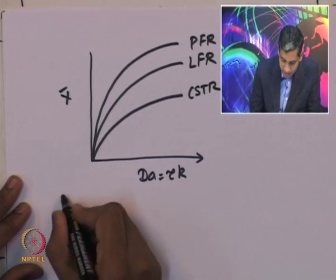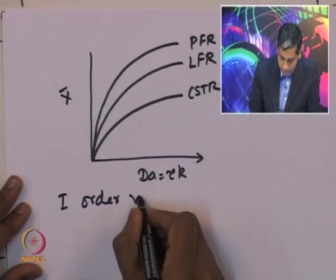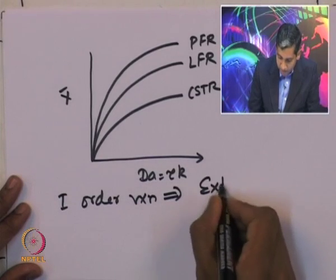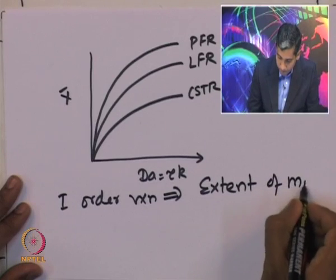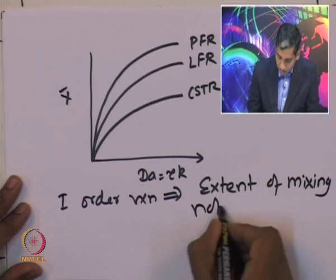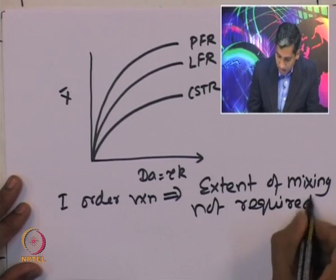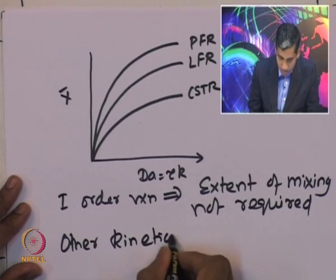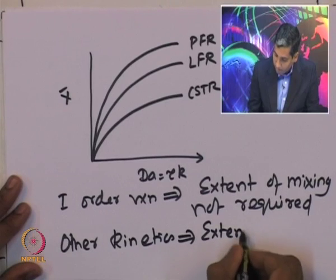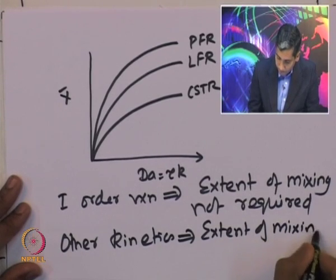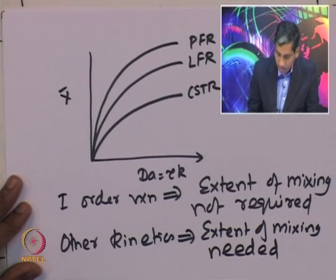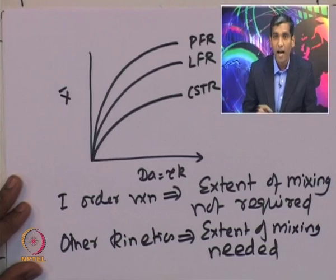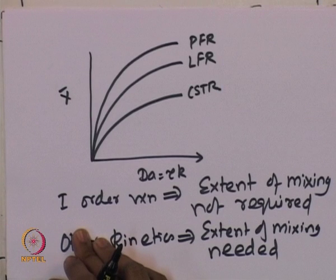This suggests that for a first order reaction, the extent of mixing is not required to predict conversion, while for other reactions and other kinetics, the extent of mixing plays an important role. Let us now move to the next model: the maximum mixedness model.